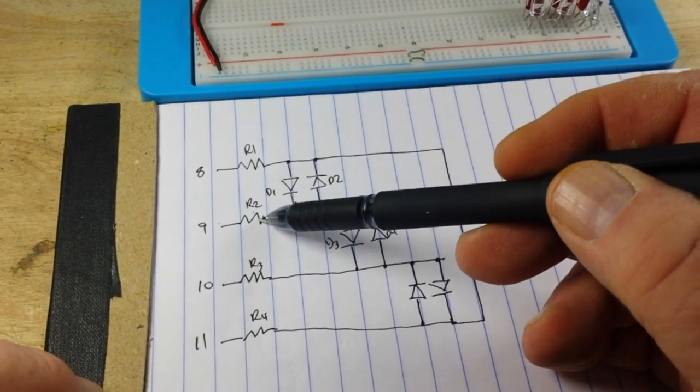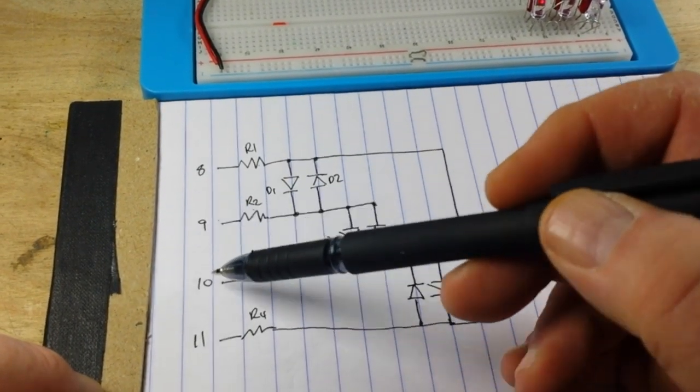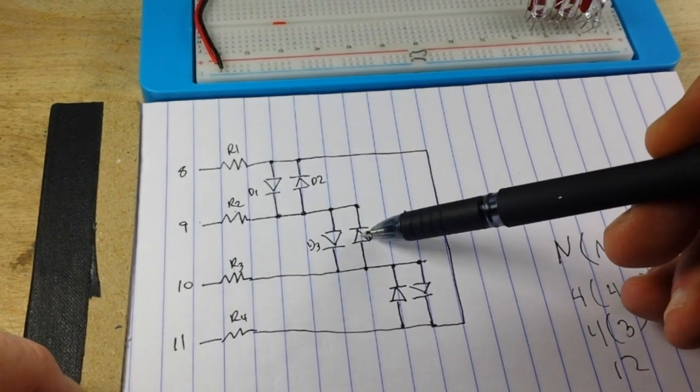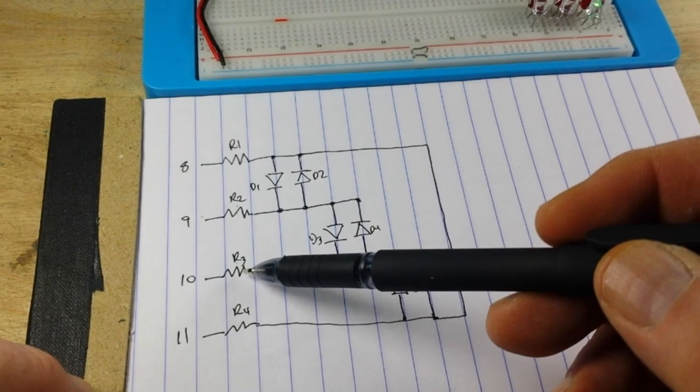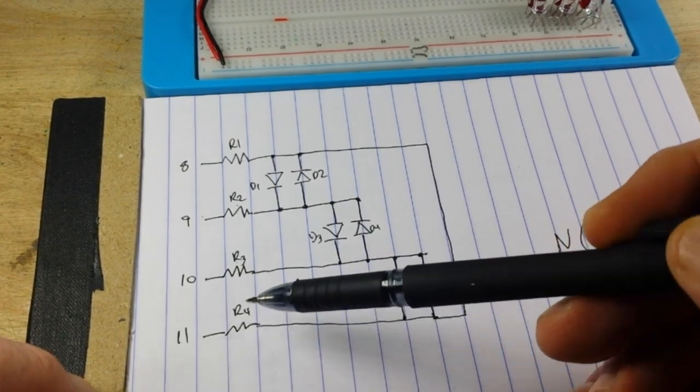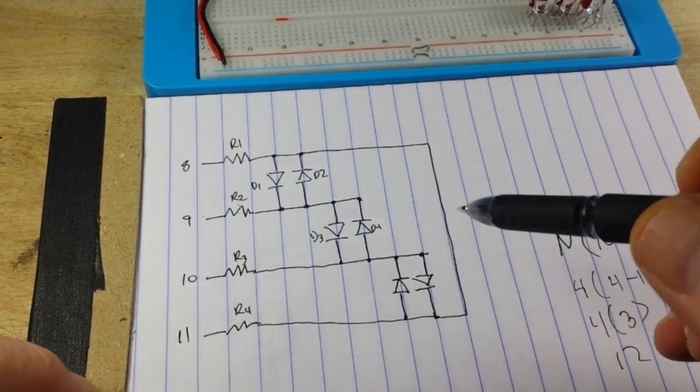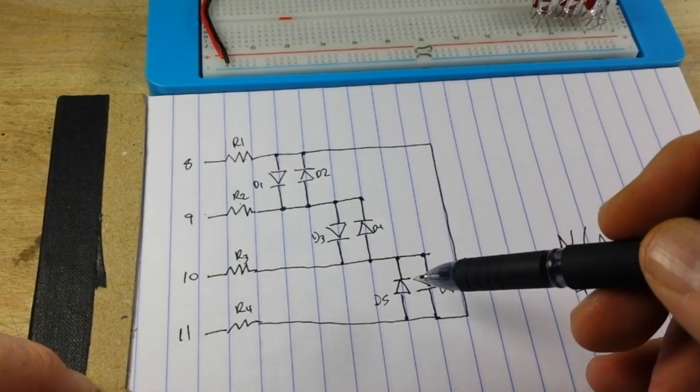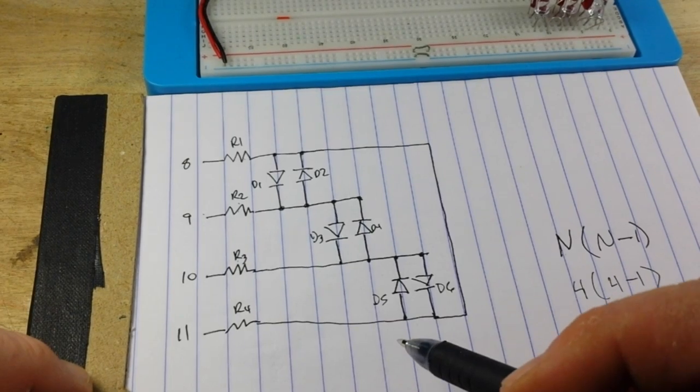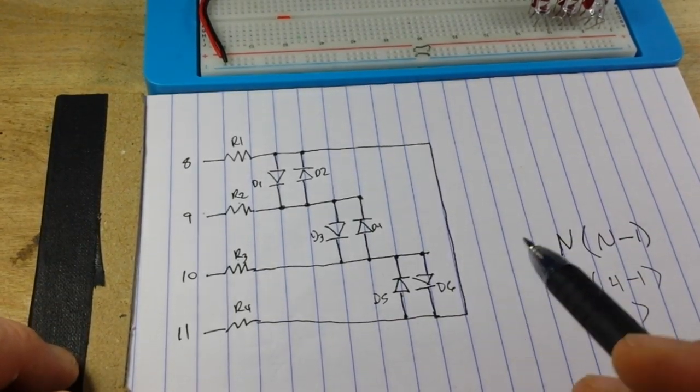Then between R2 and R3, which is input 2 and input 3, we connect D3 and D4 again in opposite polarity. And then between input 3 and input 4, we connect D5 and D6 in opposite polarity again. And that is really all it takes.